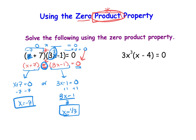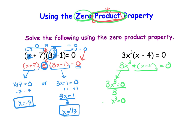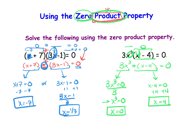Looking at the second example, we have 3x³ times (x − 4) equals zero. We have the product requirement and the zero requirement. Setting 3x³ = 0 gives us x³ = 0 — the only number raised to a power that equals zero is zero itself, so x = 0 is one option. Setting x − 4 = 0 gives x = 4. Putting 4 in makes it 4 − 4 = 0, so we'd have something times zero equaling zero. Each equation has two answers.